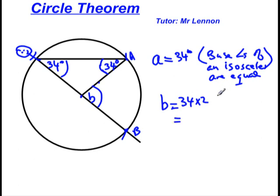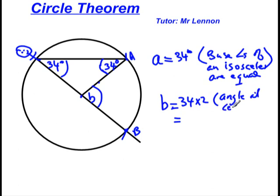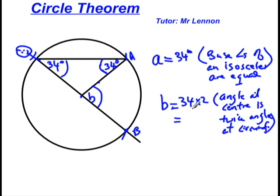Okay, what's the reason? Angle at the center is twice the angle at the circumference. So if this angle at the circumference is 34 degrees, the angle at the center would be twice it, which is 68 degrees.